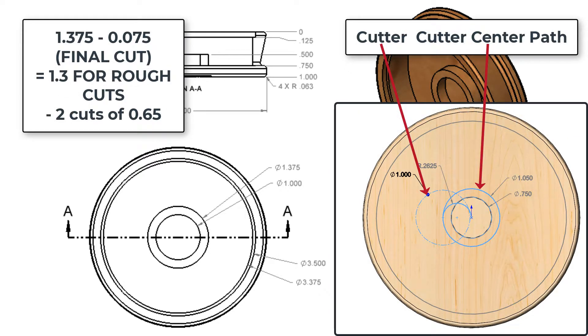I'm using a 1 inch cutter so if I take two rough passes of 0.65 this will use 65% of the cutter.